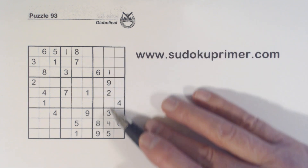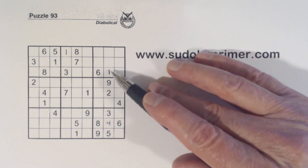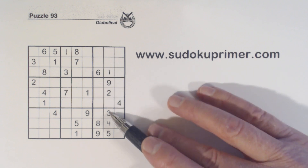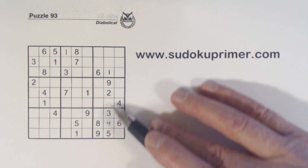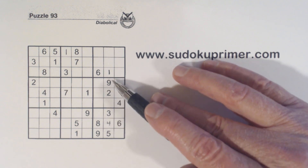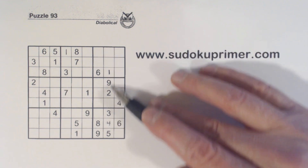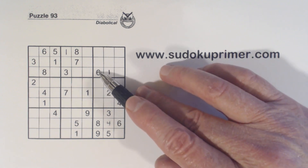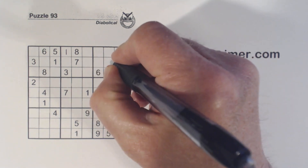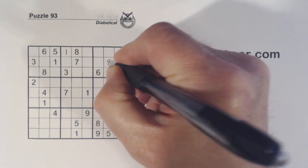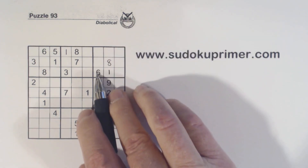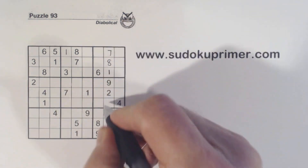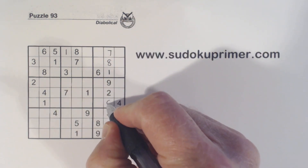Let's look at this column right here and see what we're missing: six, seven, eight, nine. There's a six and a seven there so that's an eight. Six and eight there so that's a seven, and that leaves a six there.